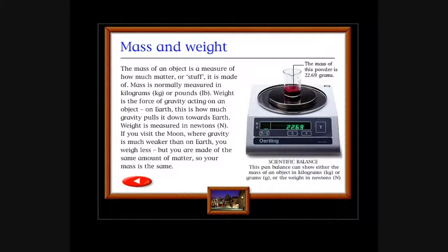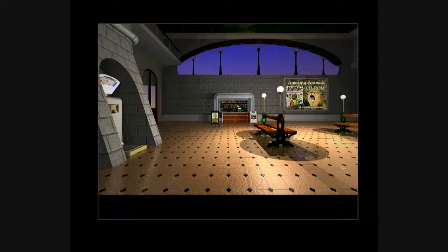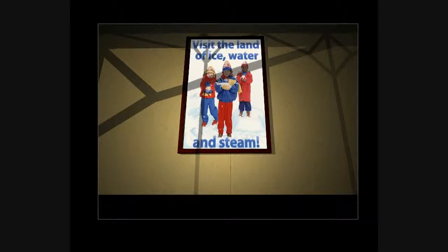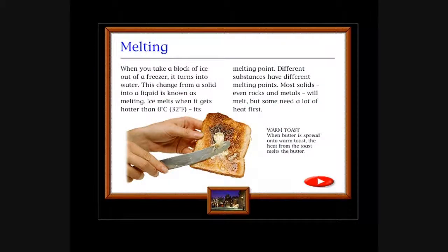Mass and weight: The mass of an object is a measure of how much matter or stuff it's made of. Mass is normally measured in kilograms (kg) or pounds (lb). Weight is the force of gravity acting on an object. On earth, this is how much gravity pulls it down towards earth. Weight is measured in newtons (N). If you visit the moon where gravity is much weaker than on earth, you weigh less, but you are made of the same amount of matter so your mass is the same. The mass of this powder is 22.69 grams. This pan balance can show either the mass of an object in kilograms or grams, or the weight in newtons.